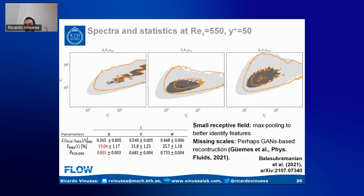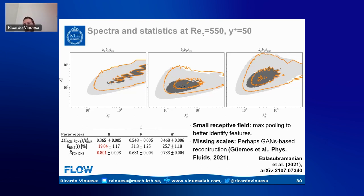The power spectral densities at y+ = 50 are in quite good agreement, though we're missing small scales — some energetic content is displaced in the V and W spectral components. We get overall 19% error in the predictions, which is a reasonable result. This could be improved by adjusting renormalization with max-pooling in the first layers or using GANs to reconstruct smaller scales. It's an interesting step towards predictions in the context of wall modeling applications.